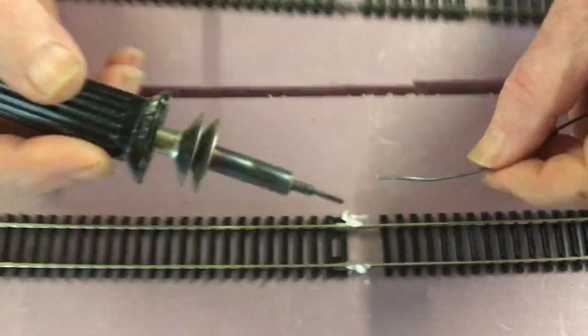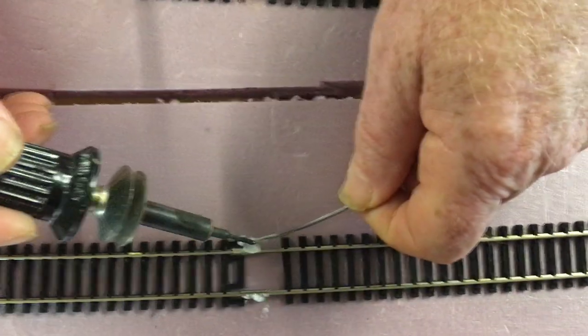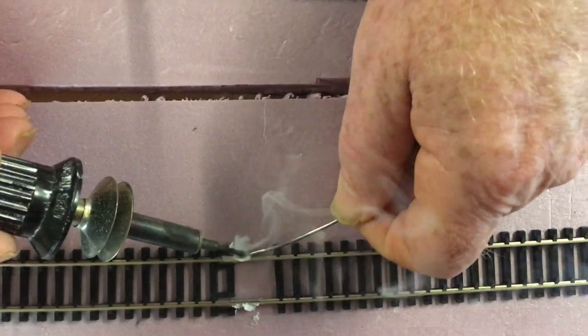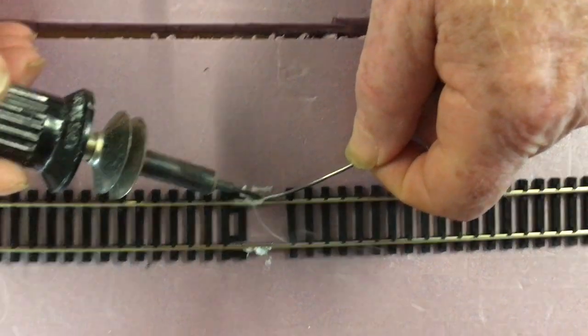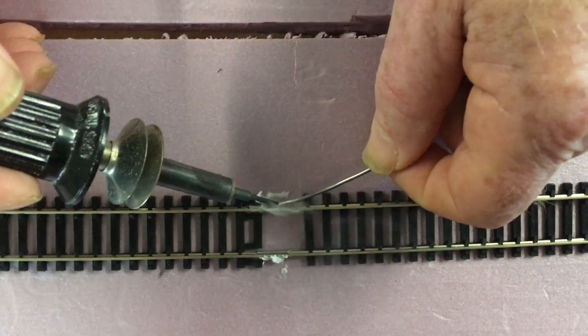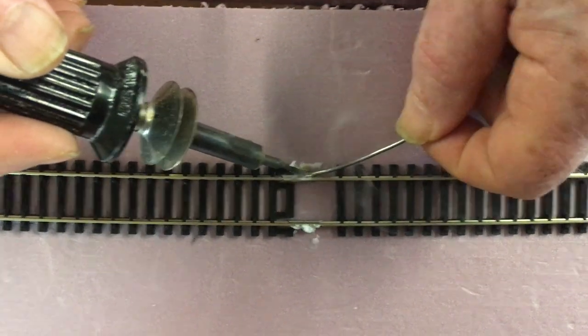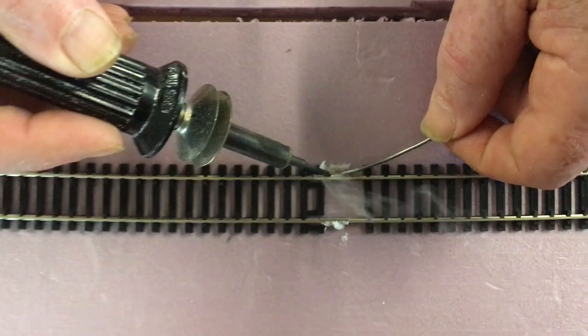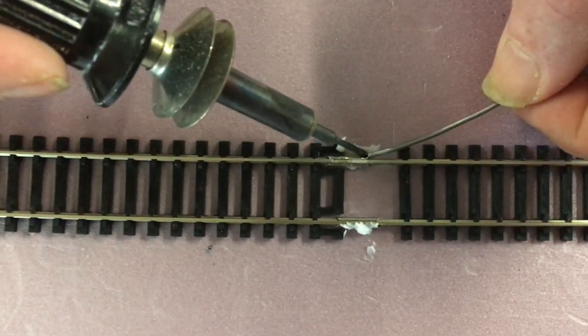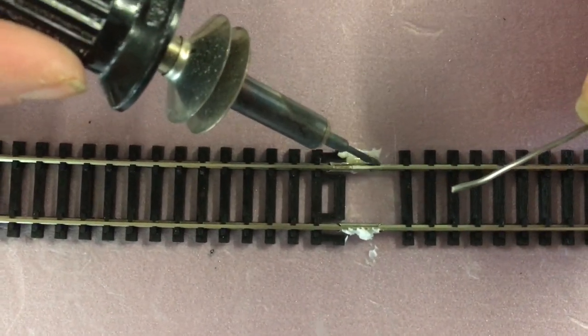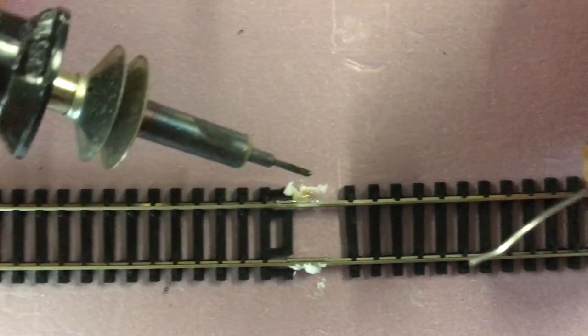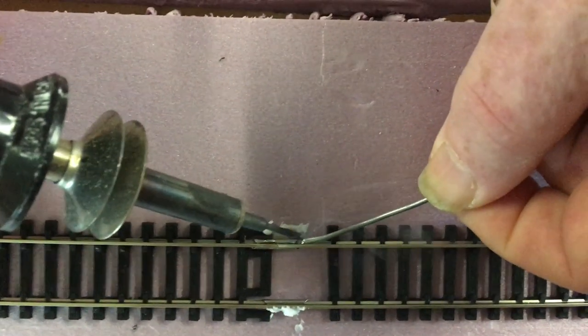We're going to come over here and do this section as well. So we're going to hit this, bring that solder in. Let that flow in there. We're going to follow our iron a little bit with that solder. And you can see that solder flow along that rail to make that connection for us.